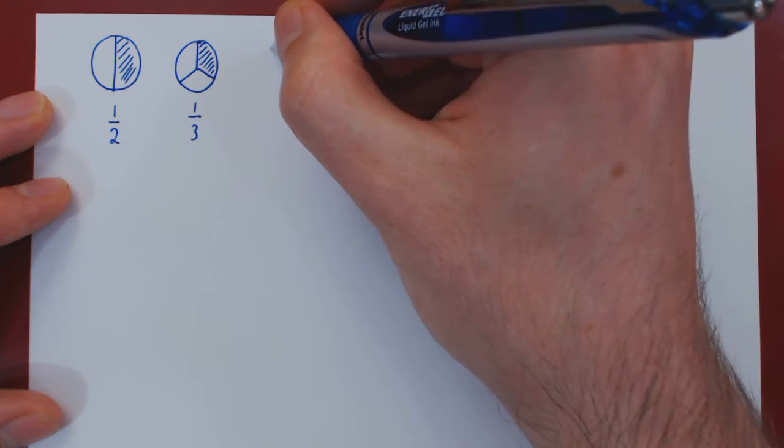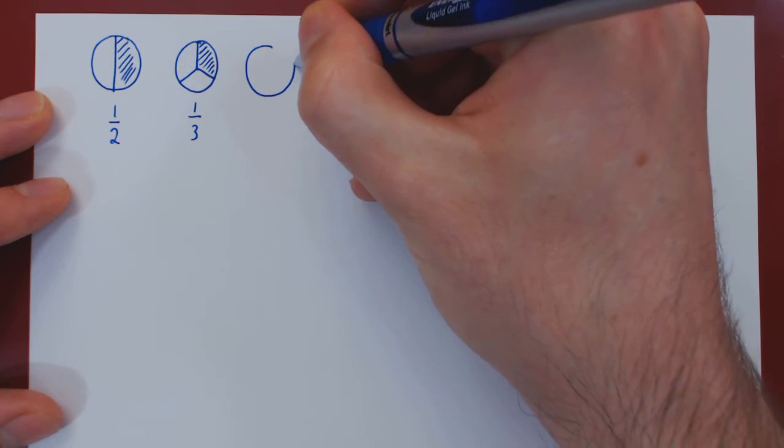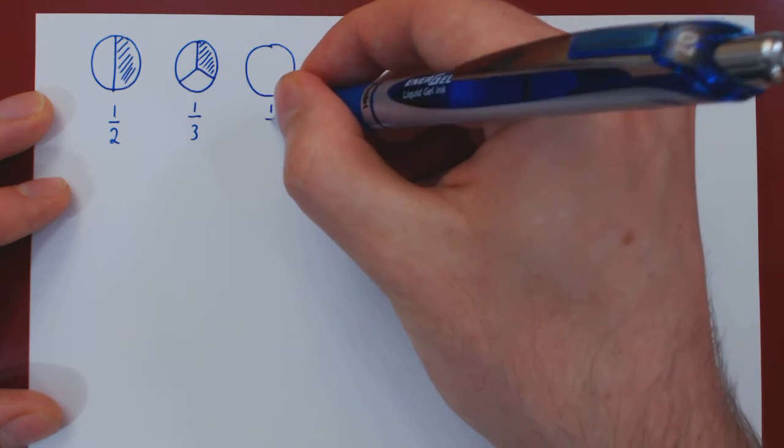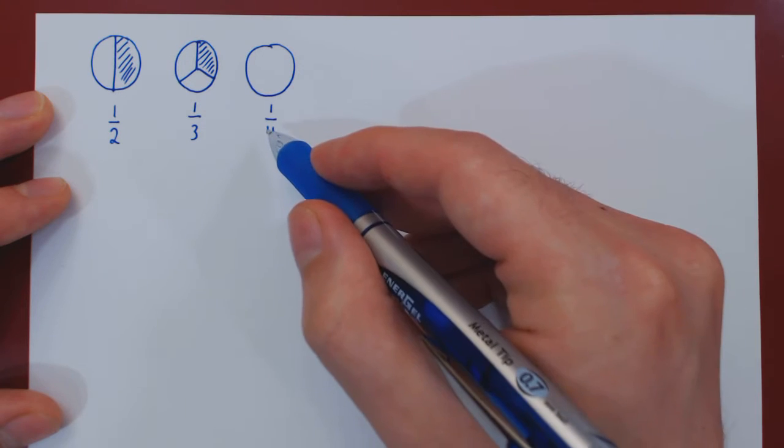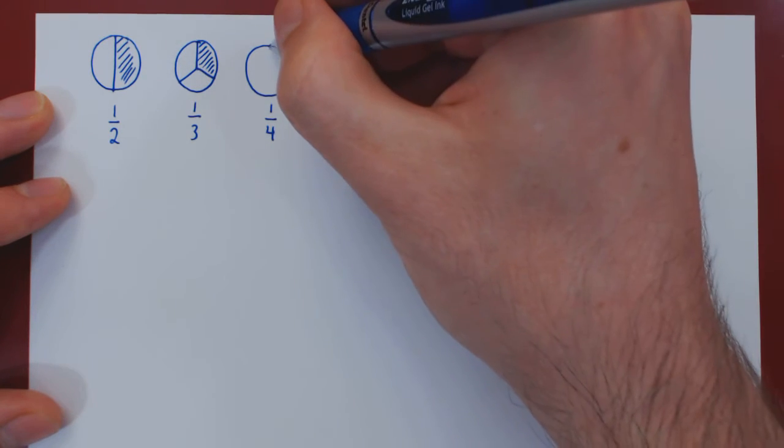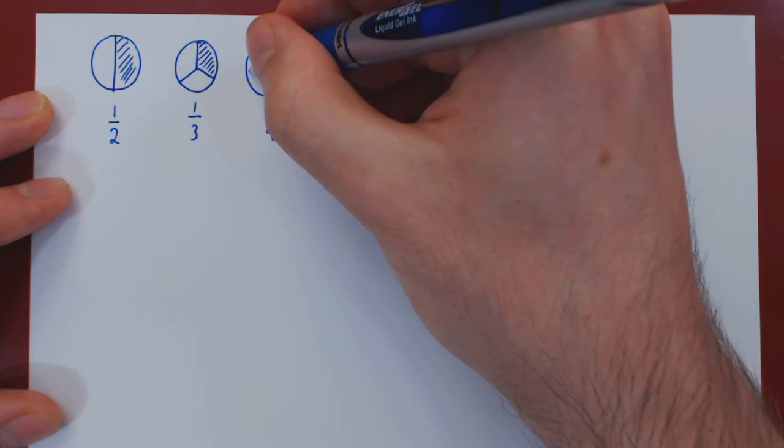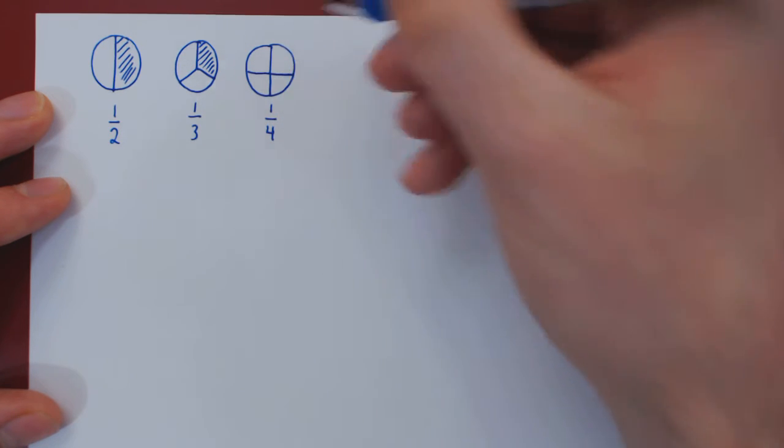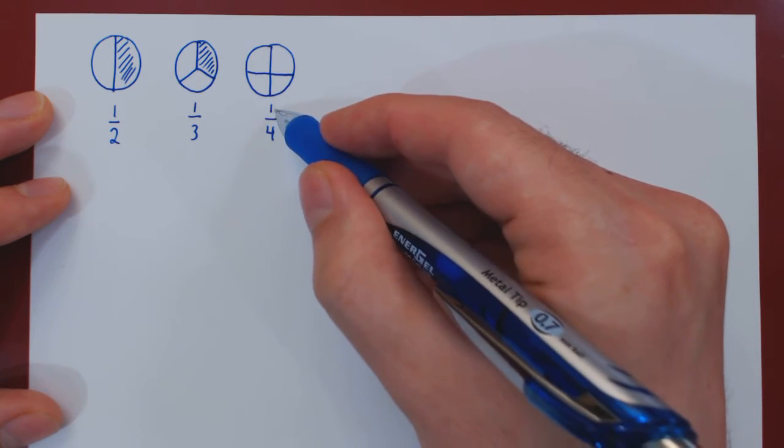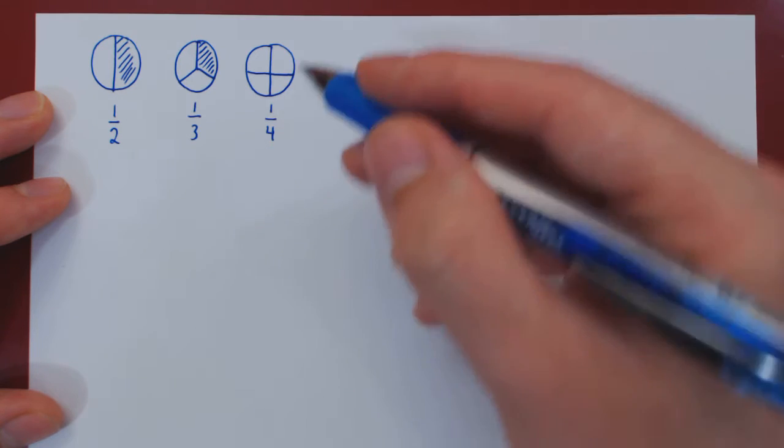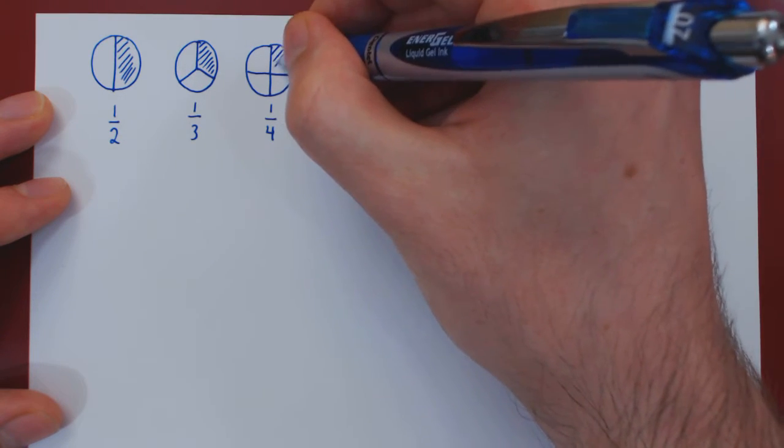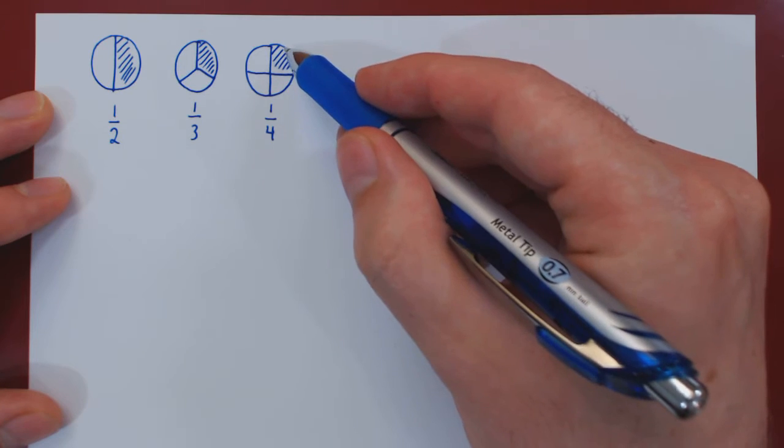What about one quarter? If you look at one quarter, we divide the whole into four parts of equal size and take one part out of the four parts. So this would correspond to a quarter.